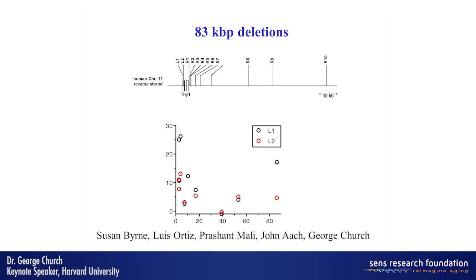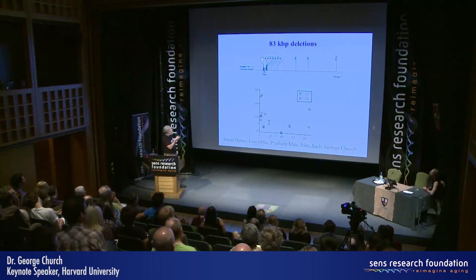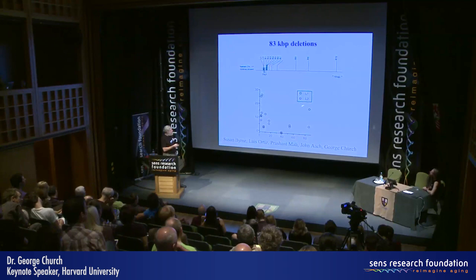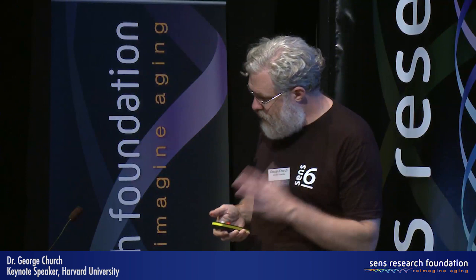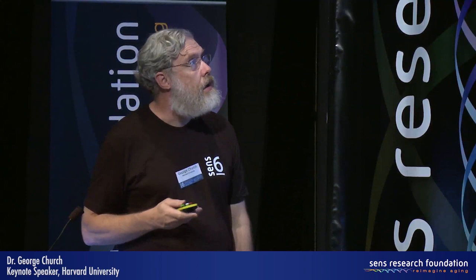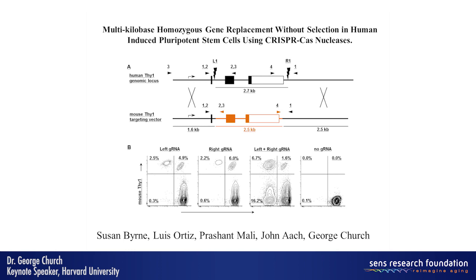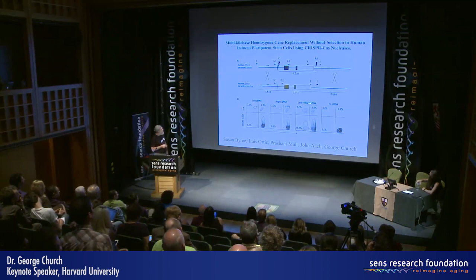Susan Byrne and colleagues in our group have shown, and it's very site-specific where you make the double-strand breaks: you can engineer up to an 83 kilobase region, going from between left one or left two sites — making a cut at that end and making a cut at the other end 80-some kilobases away — you can get up to 20% efficiency without selection, without any selectable markers. It's scarless other than the intended mutation. Susan also did this replacement — we can replace the human THY1 locus with a mouse version and vice versa, popping them back and forth, getting on the order of 6.7% replacement without selection if we use both left and right guide RNA cleavage, with significant but reduced rates if we just use left or right, and essentially no background if we don't use either RNA.